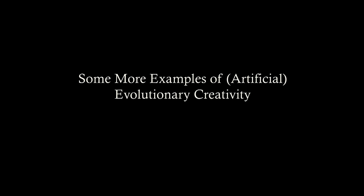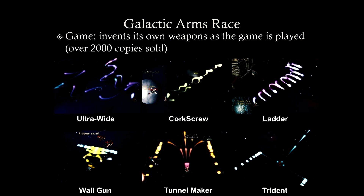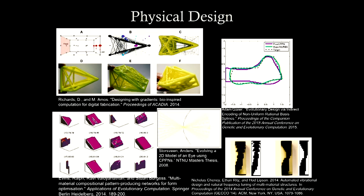I just want to end by showing you a few examples to whet your appetite. We haven't achieved open-endedness, but here are some steps towards open-ended systems. Here's a video game where the weapons — in a space game — were created by a quality diversity divergent algorithm while the game is played. It's inventing new weapons; these are not invented by game designers, they're invented by the algorithm itself. Physical designs are being evolved all the time.